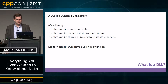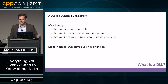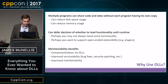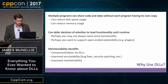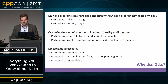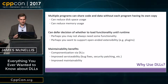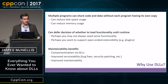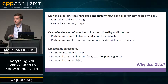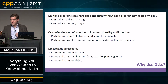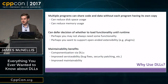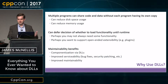Most normal DLLs have a .dll file extension, though you don't actually have to — it could be a .text extension and some things will work just as well. The biggest advantage is that multiple programs can share code and data without each having its own copy, which can reduce disk space usage because your EXEs are smaller. It can also reduce memory usage, because if DLLs are loaded into many different processes, all of the read-only pages of those DLLs can generally be shared between multiple processes, reducing overall system memory usage.